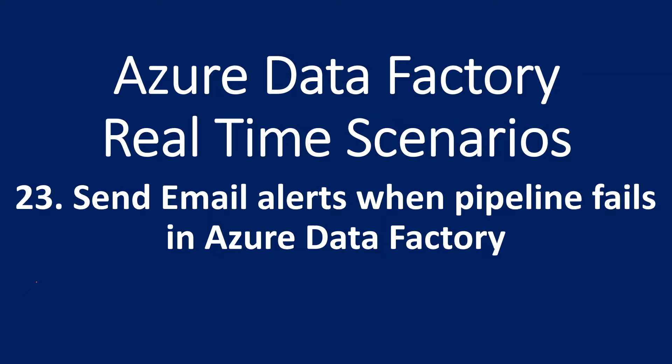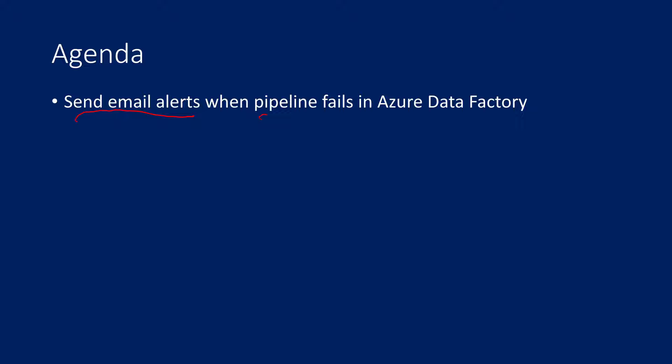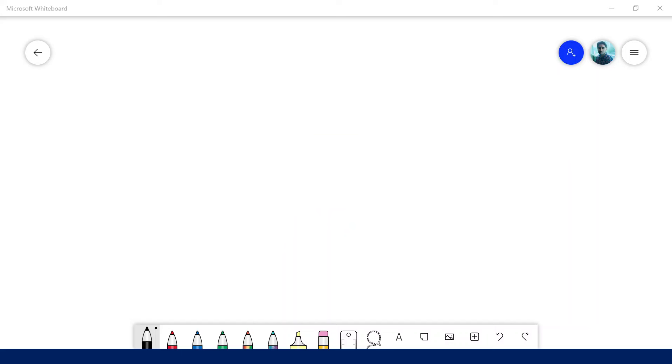Hi friends, welcome to Wofa Studies YouTube channel. This is part 23 in the Azure Data Factory real-time scenarios playlist. In this video I am going to discuss how to send an email alert whenever any pipeline fails in Azure Data Factory. We are going to look at this in a practical implementation manner.